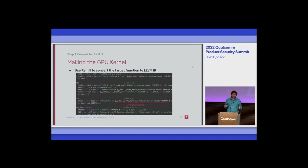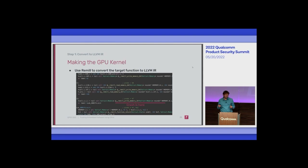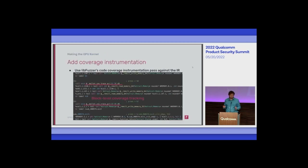We actually have a more advanced lifter that should do a better job, but it needs some tuning for this use case. So we take the target function and convert it to LLVM IR. Then the problem is we have this target function in LLVM but we need to insert a bunch of instrumentation. Thankfully there's a neat LLVM-based fuzzer that does a lot of instrumentation and mutation called libFuzzer — it comes with Clang.